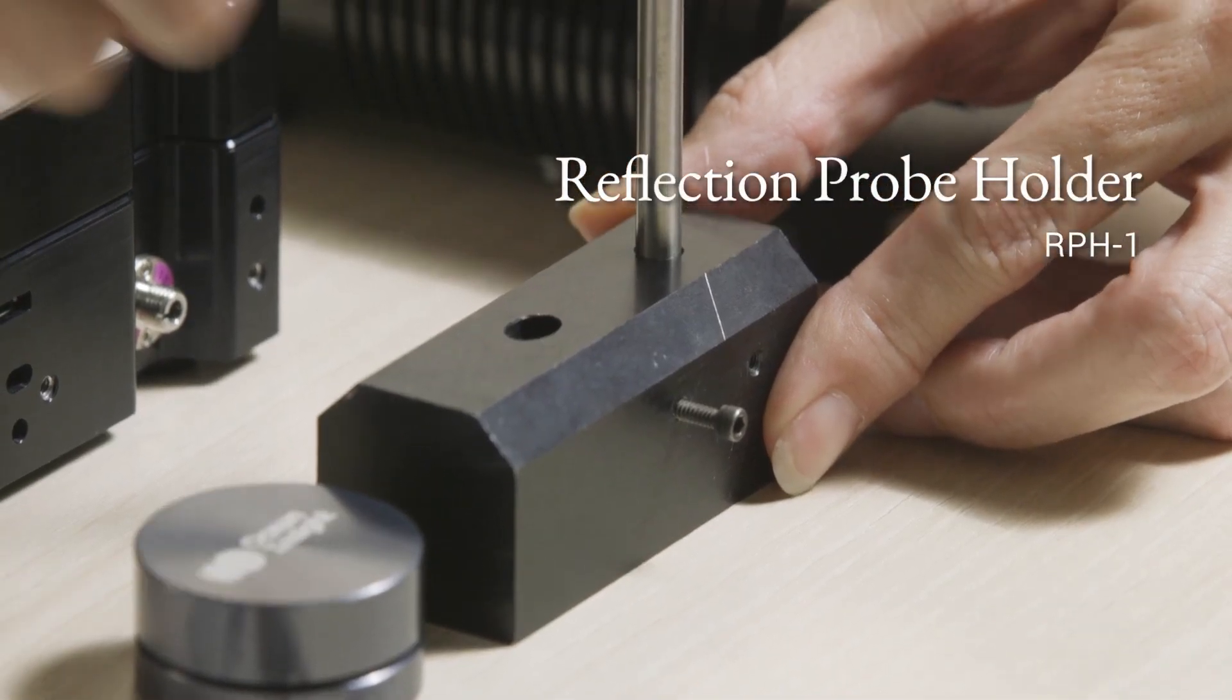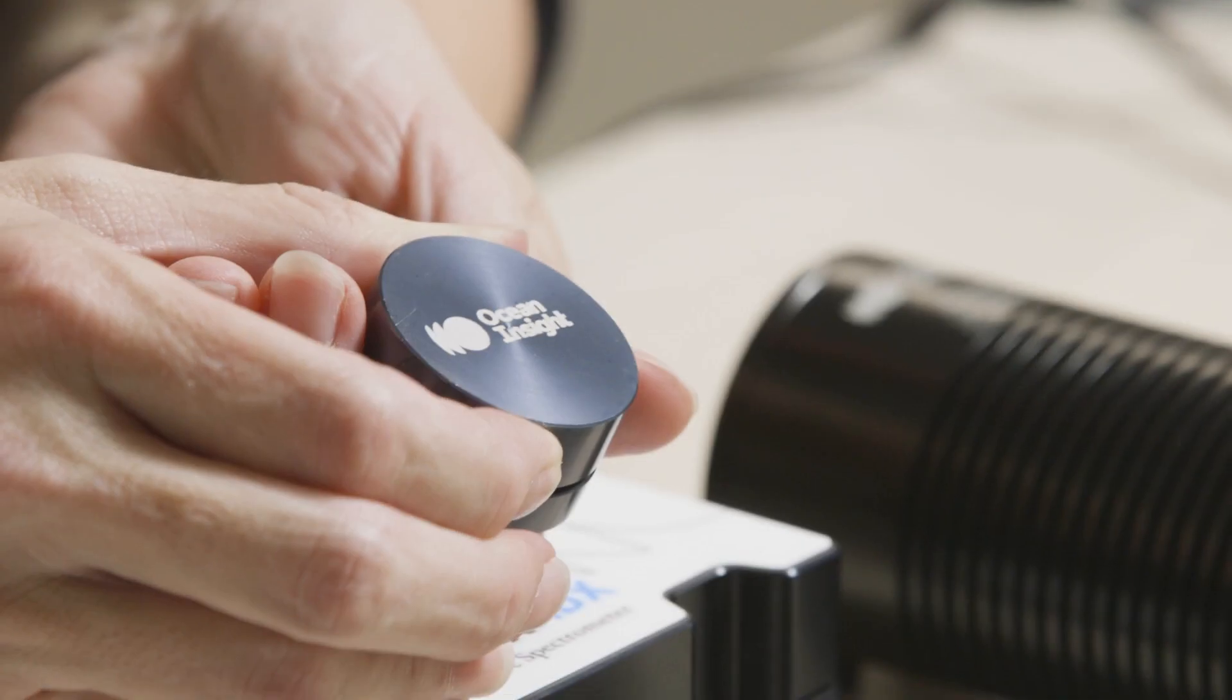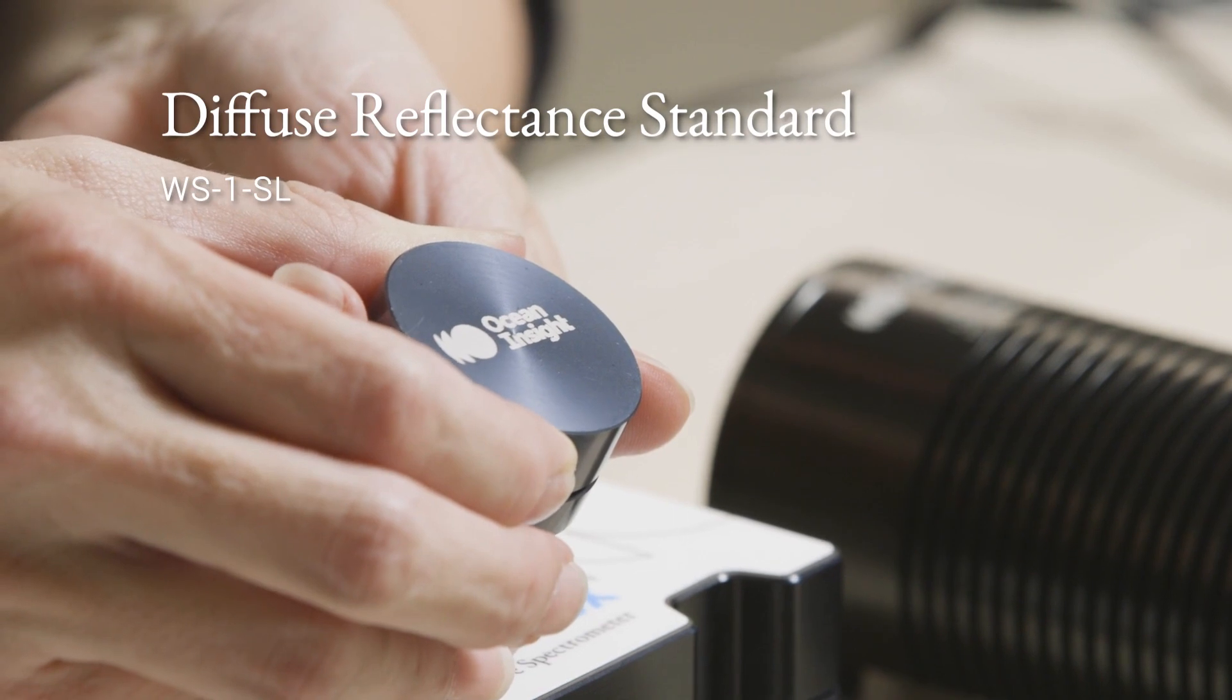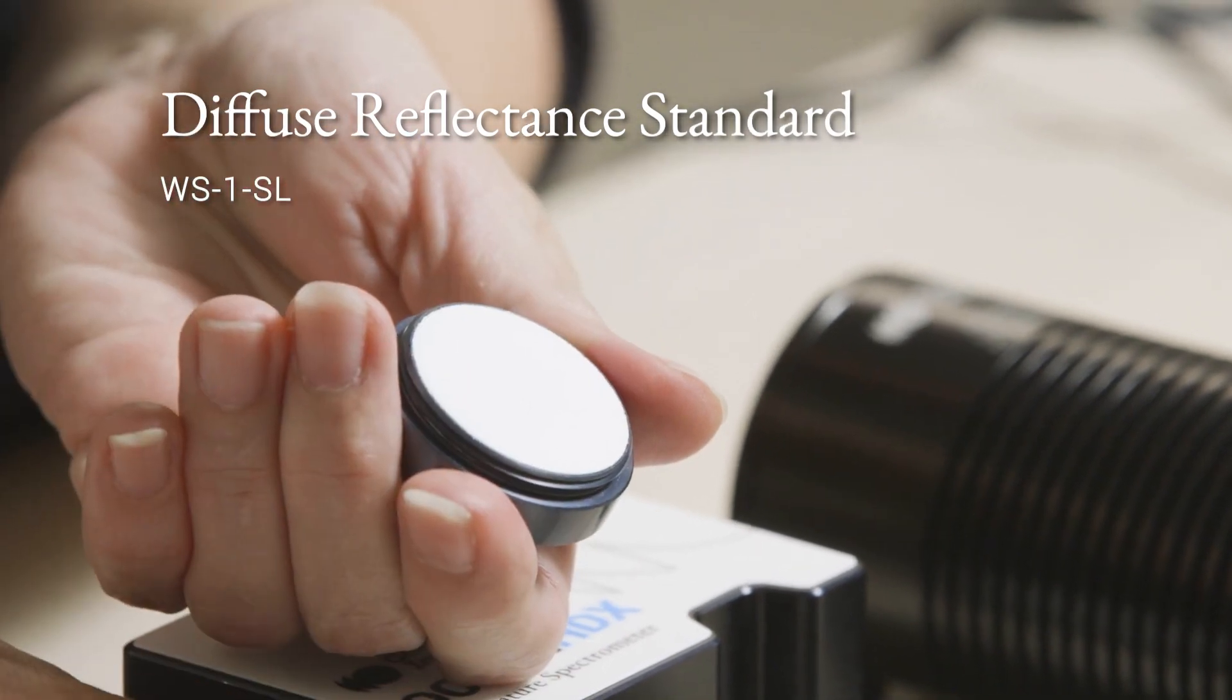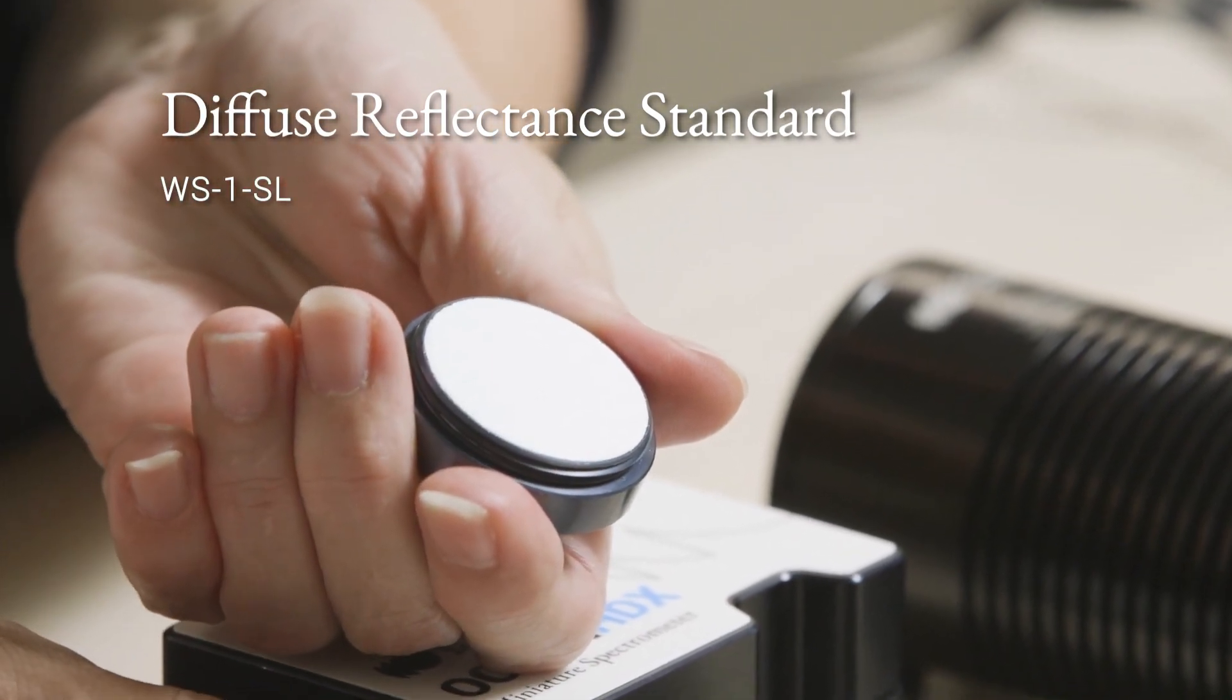The other accessories that we have here are our reflection probe holder, and then we have our reflectance standard, which we're going to use to take the reference for our reflectance measurement. In this case, we're using a spectralon standard, the WS-1.